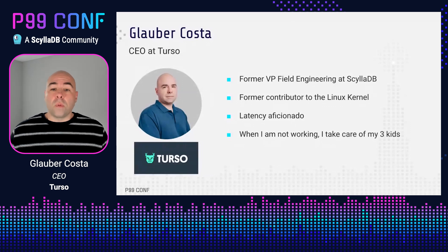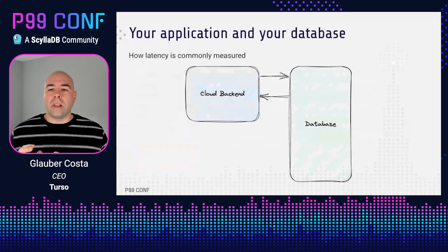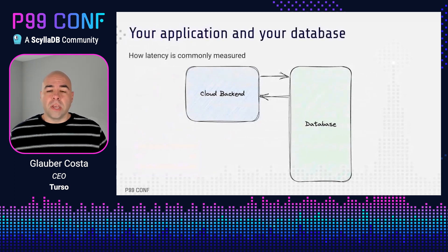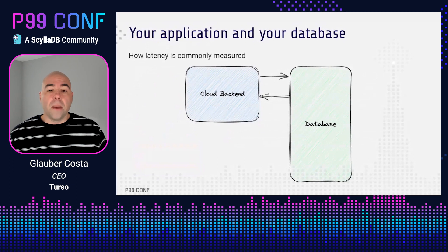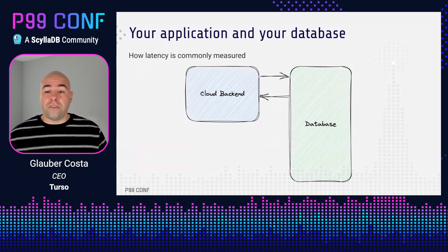All right, so let's get started. We will start by looking at how latency for database access is commonly measured. If you are measuring latency, you are probably comparing two systems. For fairness, you want to reduce the degrees of freedom of the system as much as possible — it is, after all, the scientific thing to do. That is especially true if you were publishing a benchmark. People are always looking for a way to say you've been unfair or you haven't set up the comparison properly. So you tend to keep things as simple and isolated as possible.